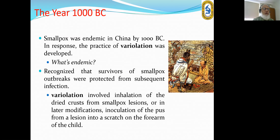Variolation means inhalation of dried crusts from smallpox lesions, or in later modifications, inoculation of material from a lesion into a scratch on the forearm of a child. A similar practice was also observed in Turkey.